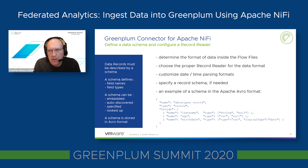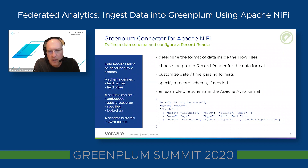Schema is usually stored in Avro format. Here's an example of a schema for a person record: fields include last name with a string type, age with an integer type, and birth date which is a logical date type in Avro represented as an integer. For example, when parsing a CSV file, the file itself has no type information. You can use column headers for field names, but you still need to provide types so we can do proper mapping between NiFi records and the Greenplum database table schema.